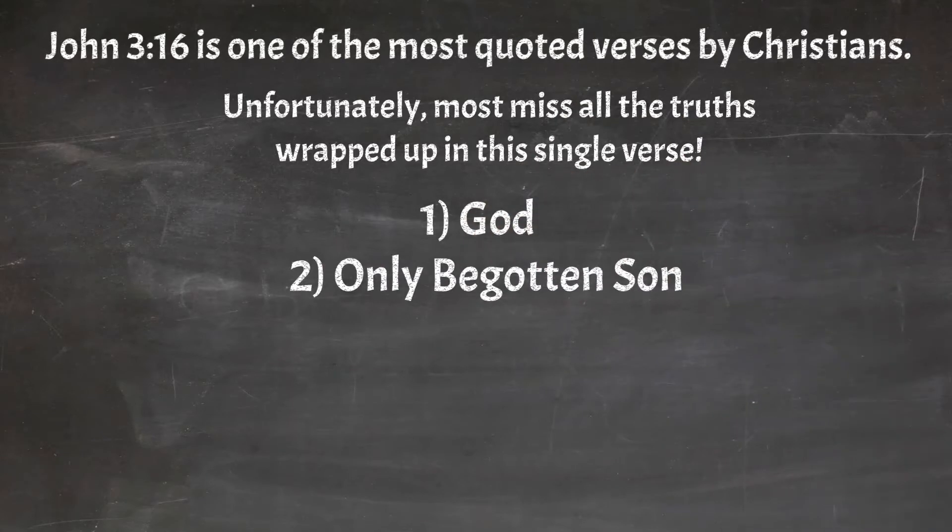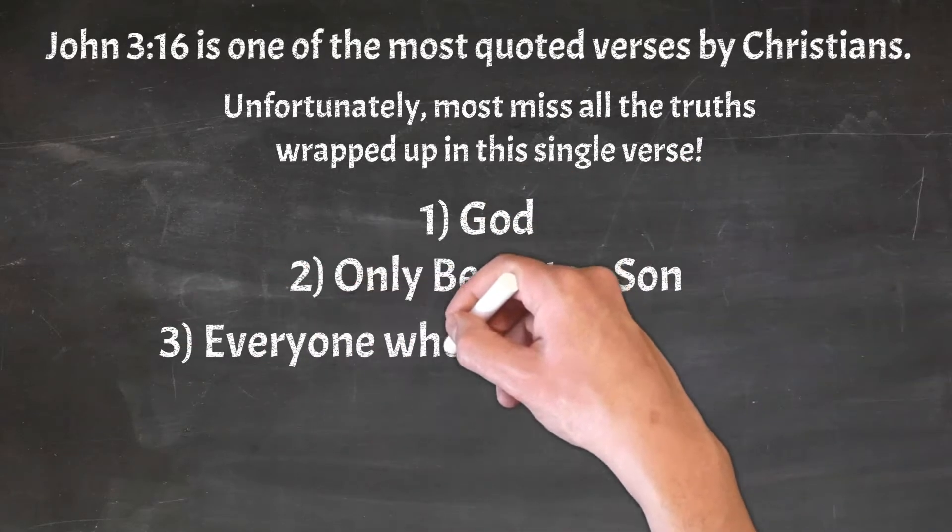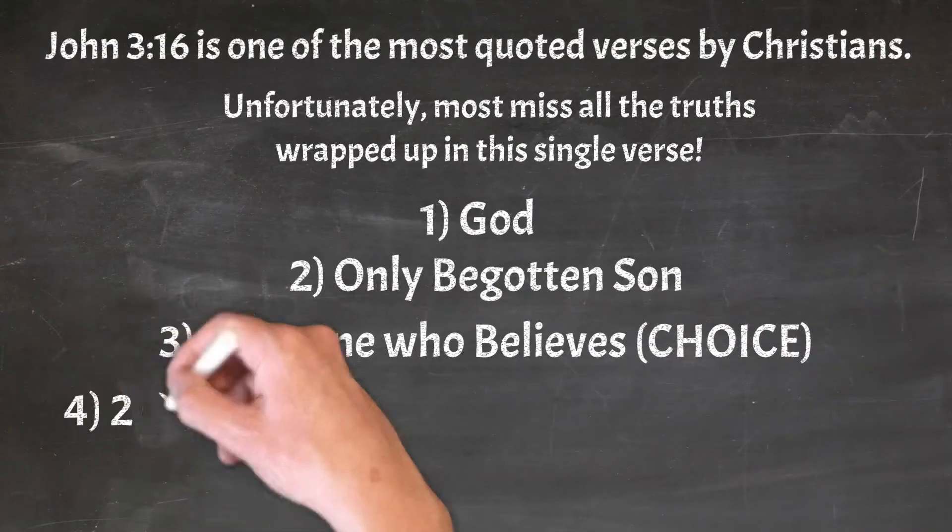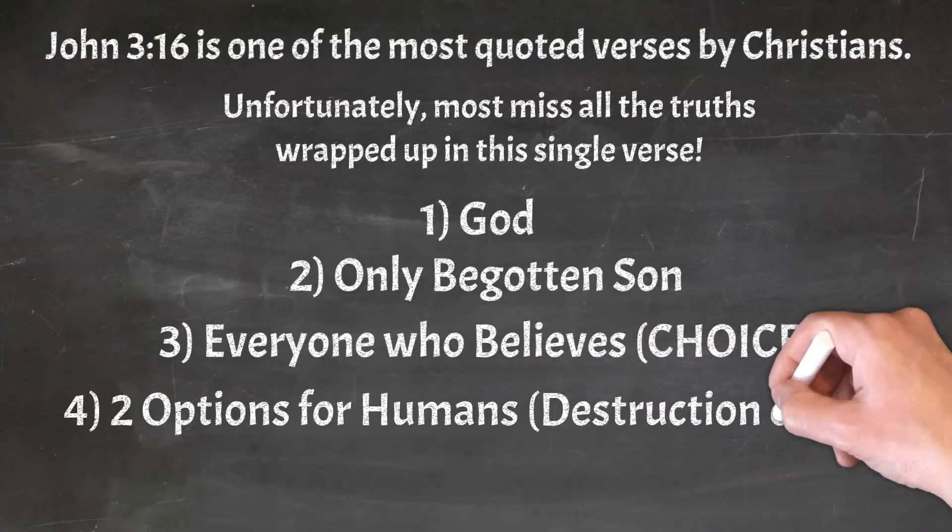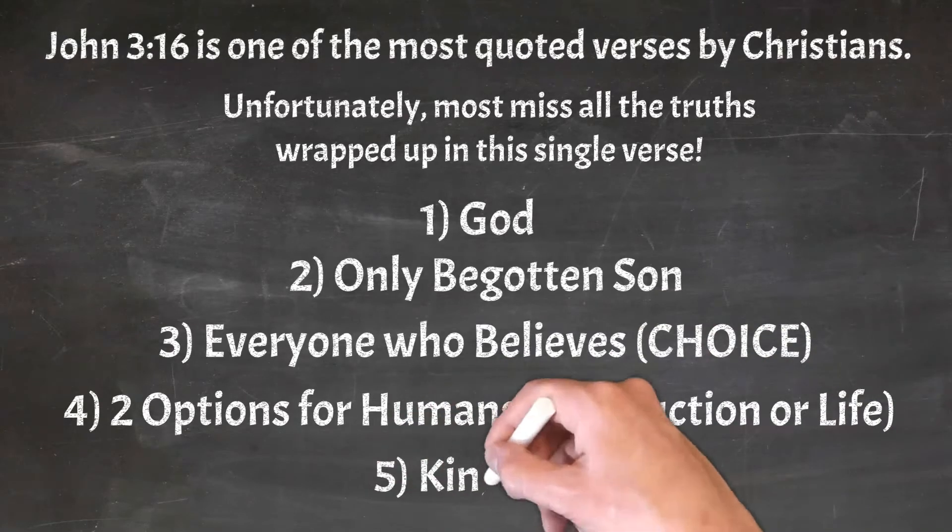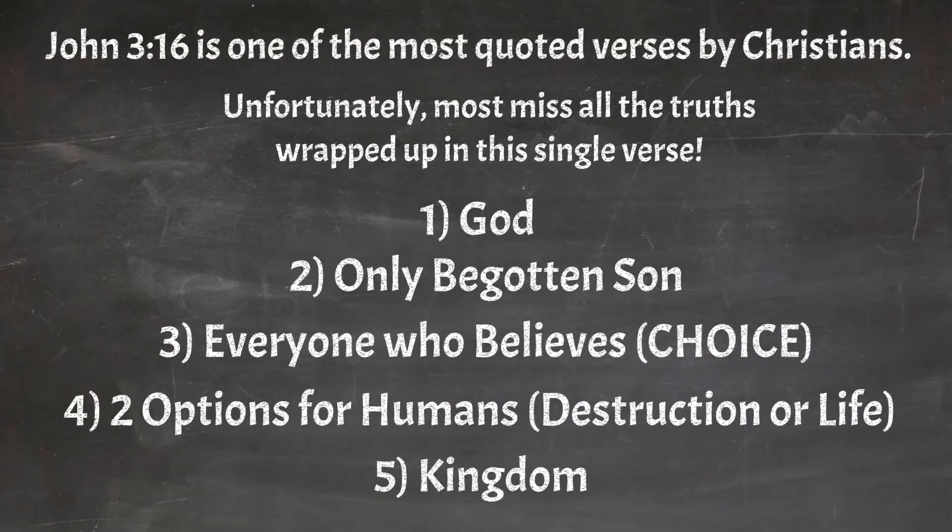Number one, it tells us about God. Number two, about the only begotten Son, Jesus. Number three, that everyone who believes has hope. It means it's a choice. Number four, there are two options for humans, destruction or life. Number five, the kingdom hope.